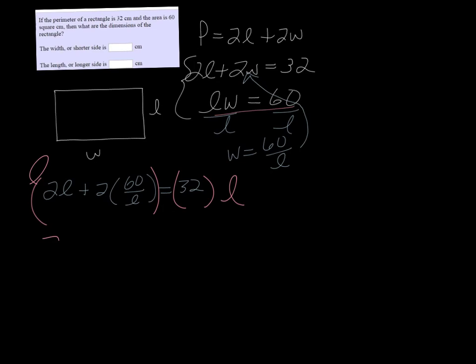And when I do that, I get 2l squared plus, well, the l's are going to divide out on the second one, so just 2 times 60 is 120, equals 32l.